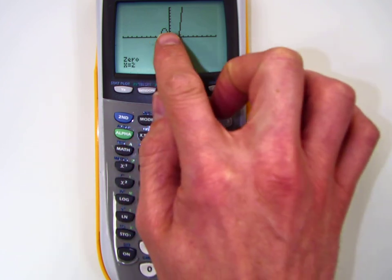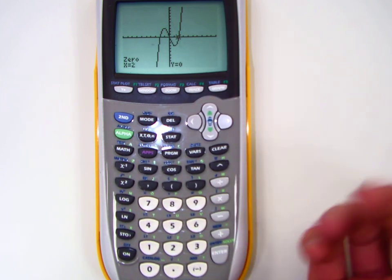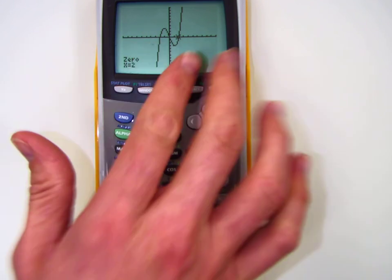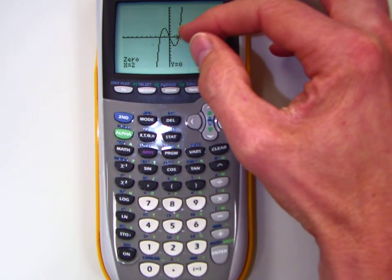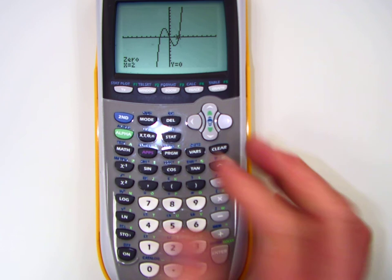So you can find any of these spots where it crosses the x-axis, which are your zeros, by doing left and right bound, by crossing over the x-axis where the value is. And that's how I solve my equation.